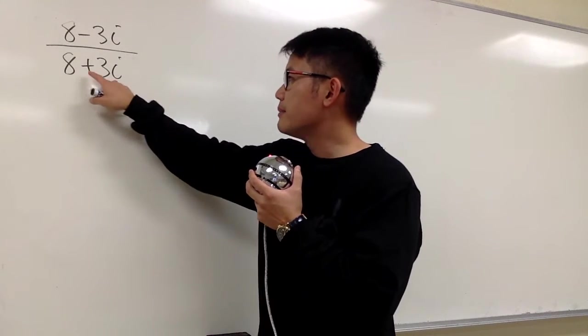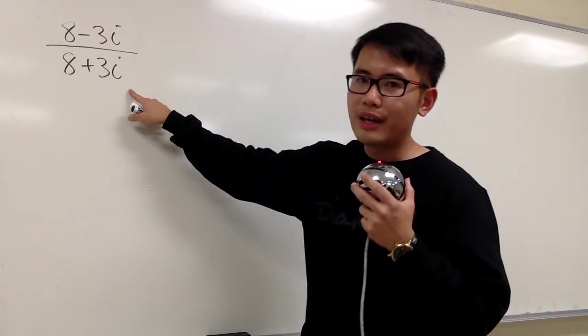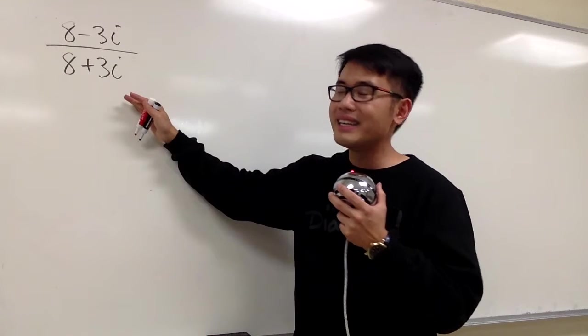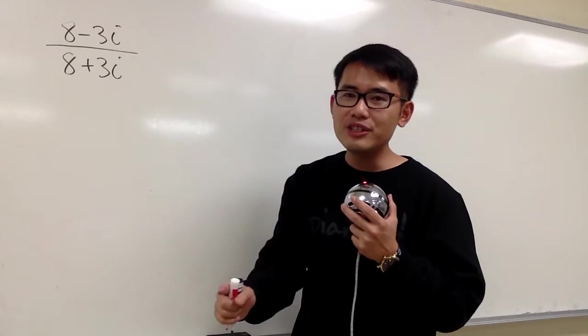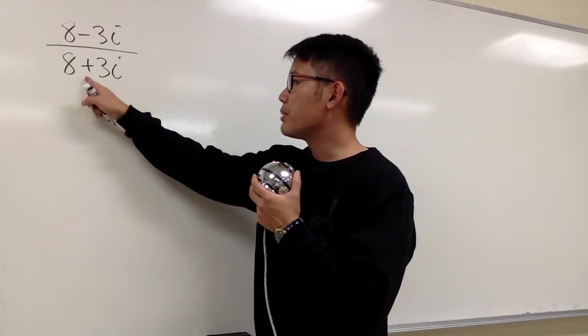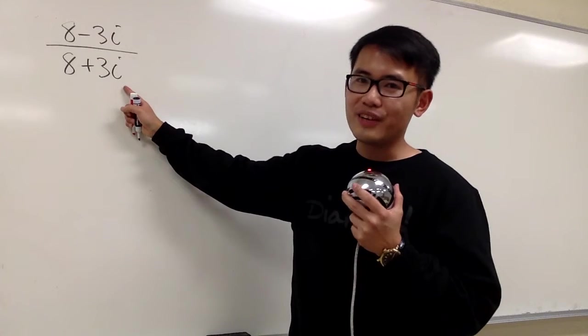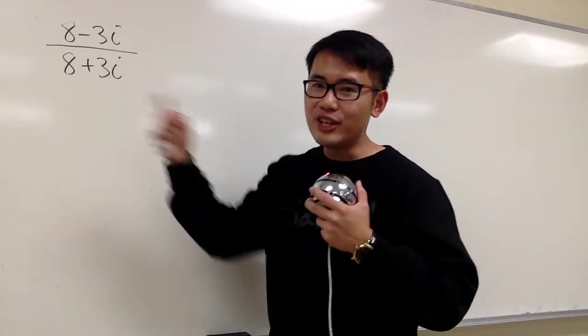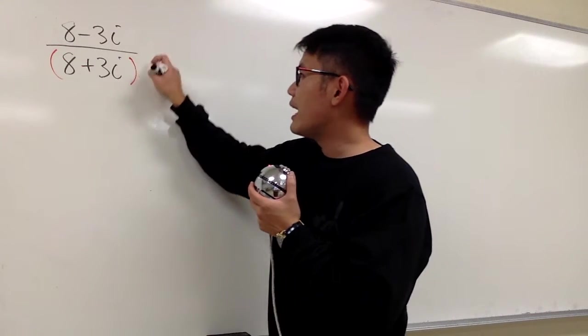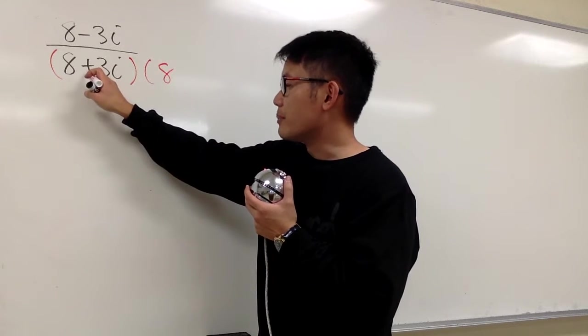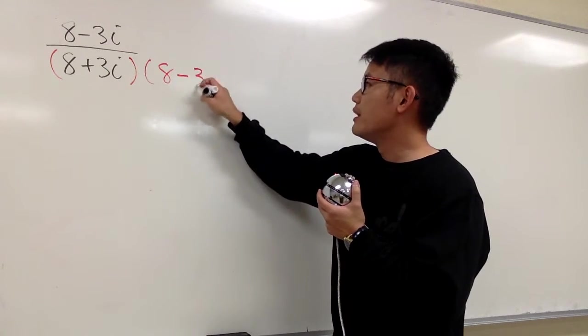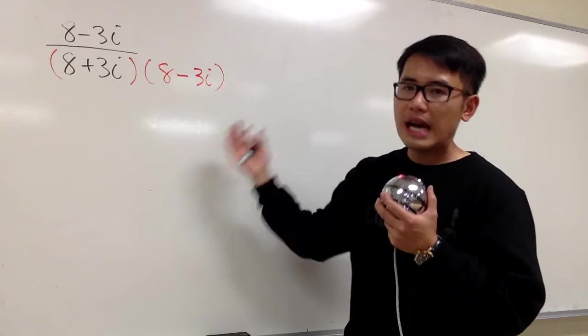This is 8 plus 3i. And to divide complex numbers, we are going to multiply the top and bottom by the conjugate of the bottom. So, that's why I said, this is 8 plus 3i. What's the conjugate of this? You just have to look at the middle and change the sign.